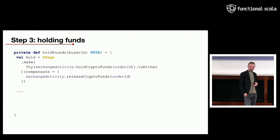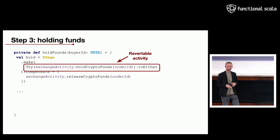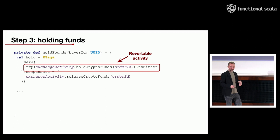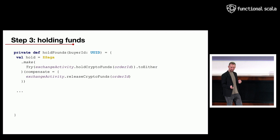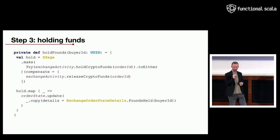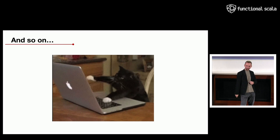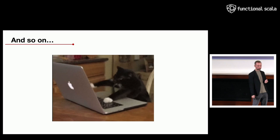The most interesting part: how do we handle actions that should be rolled back under certain conditions? For example, holding cryptocurrency — if Bob doesn't confirm the bank transfer, we should give Alice her crypto funds back. That's where sagas come to the rescue. We create a saga by providing the critical activity and then the compensating action that gives Alice her crypto back. A saga is a regular monad so we can compose them using map or for-comprehension. The for-comprehension shown before is just a composition of multiple sagas, and step by step you implement the entire business process.